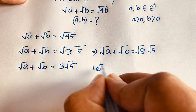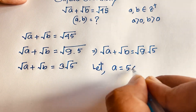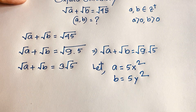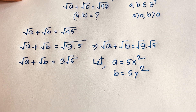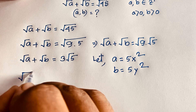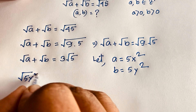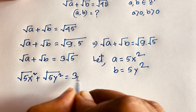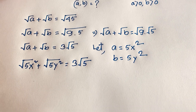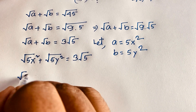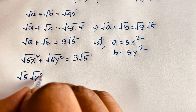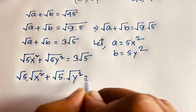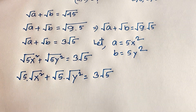Now, let A equal 5x² and B equal 5y². If I substitute these values into the equation, square root of A — which is 5x² — plus square root of B — which is 5y² — equals 3√5. This becomes square root 5 times square root of x² plus square root 5 times square root of y² equals 3 square root 5.